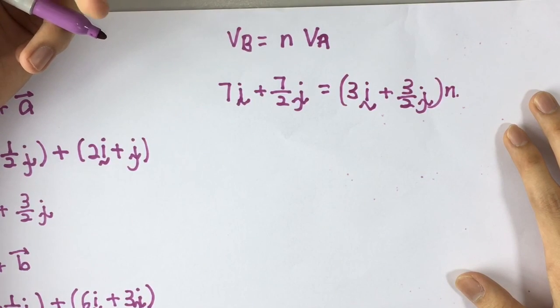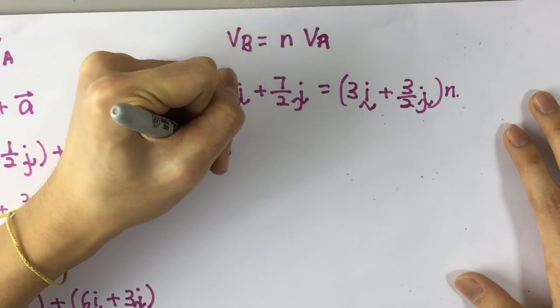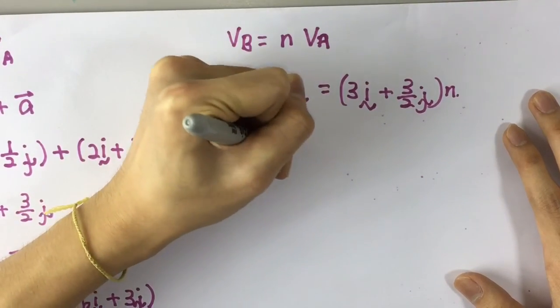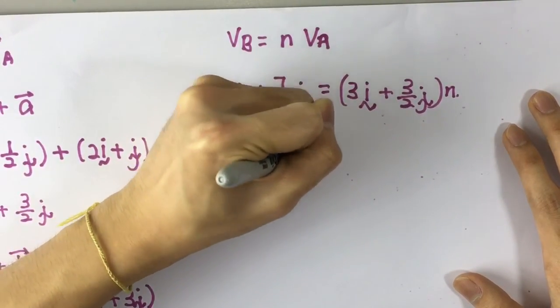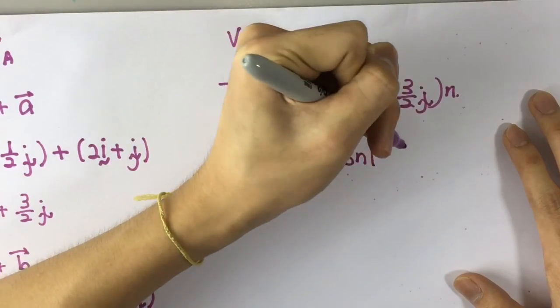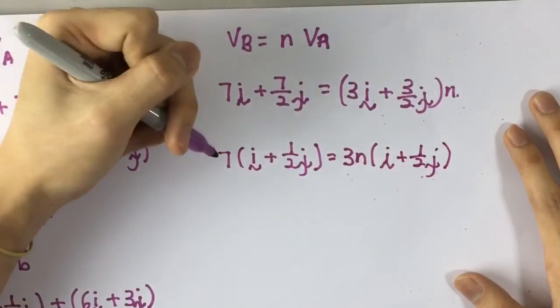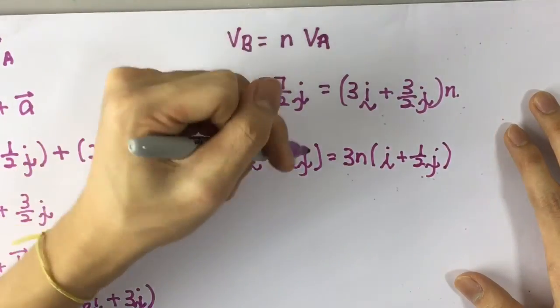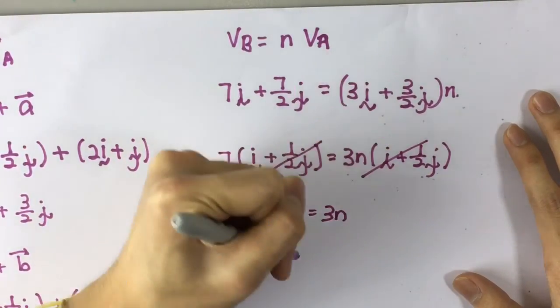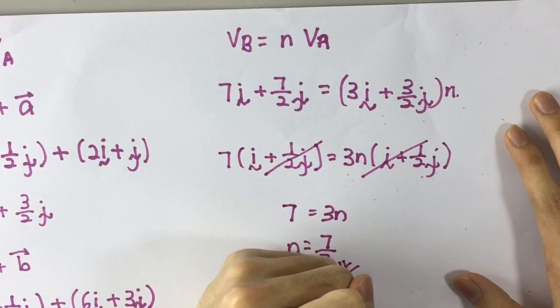You can find a common factor between the both of these vectors. So, I can take out 7, that would leave me with I and half J. And on this side, if I take out 3N, that would also leave me with I and 1 over 2 J. Because these are the same thing, I can cancel it out. So, I have 7 equals to 3N. So, N equals to 7 over 3. And that is your answer for part A.